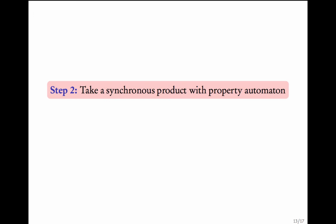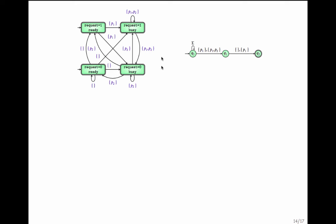Once you have this, take a synchronous product with the property automaton — that is, with the bad prefixes automaton. Recall the synchronous product from the previous module. This gives us the intersection of the finite prefixes of the transition system with the bad prefixes. If there is a non-empty intersection, that means there is a trace with a bad prefix, and hence it violates the safety property. Let us now perform the synchronous product.